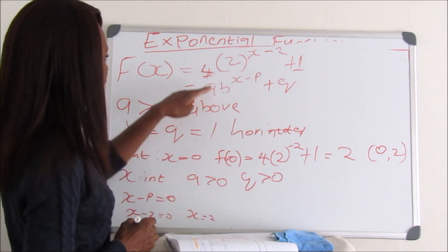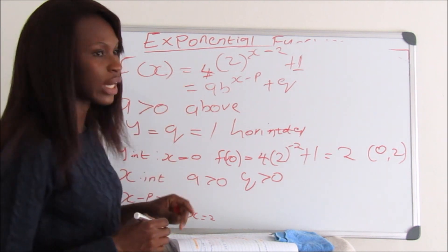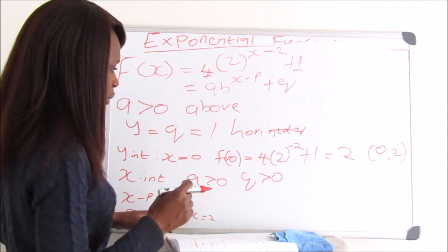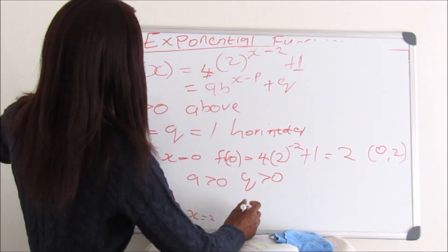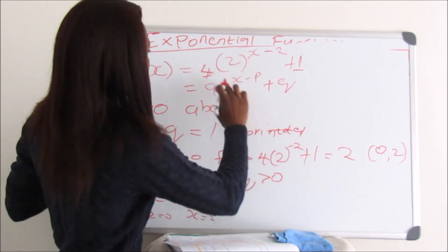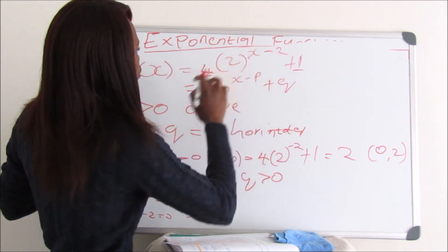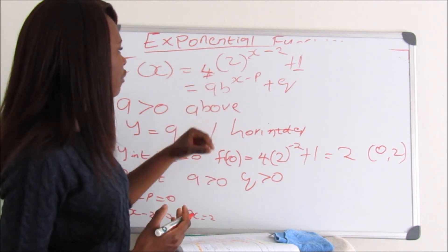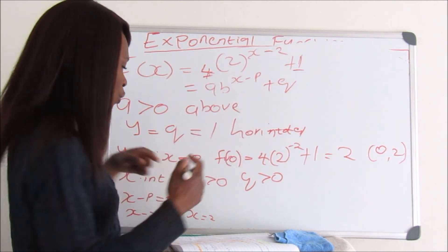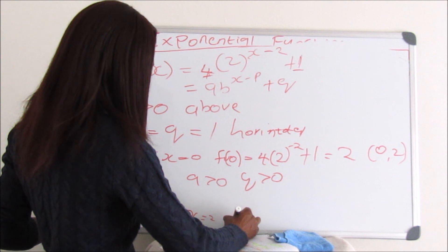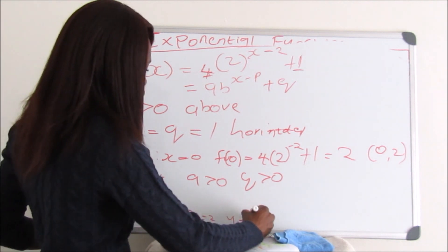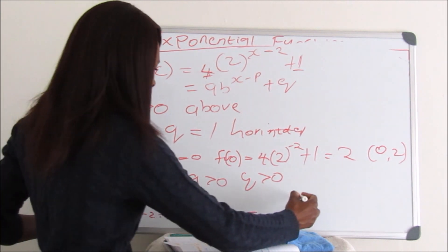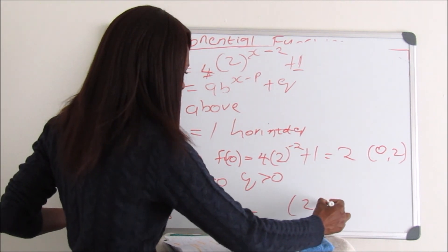We take X equals 2 and substitute it into the original equation. That gives 4 times 2 to the exponent of 2 minus 2, which is 2 to the 0, equals 1, multiplied by 4 equals 4, plus 1 equals 5. So when X equals 2, Y equals 5, giving us the coordinate (2, 5).